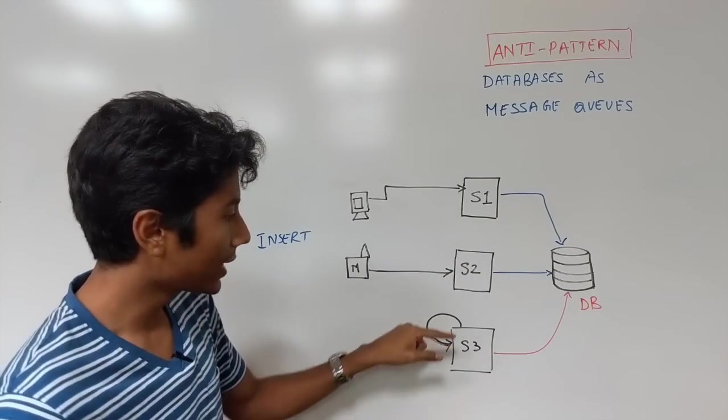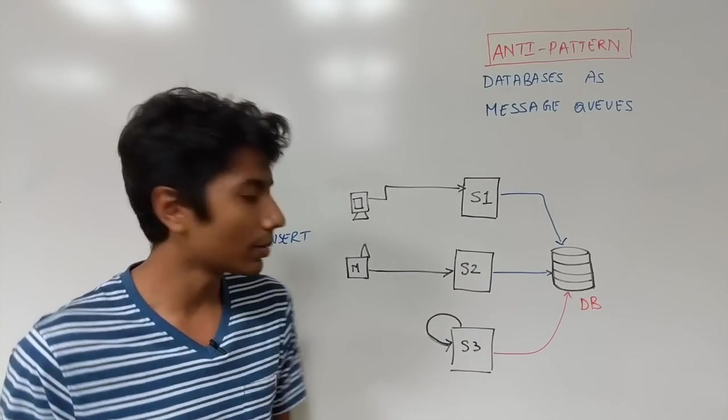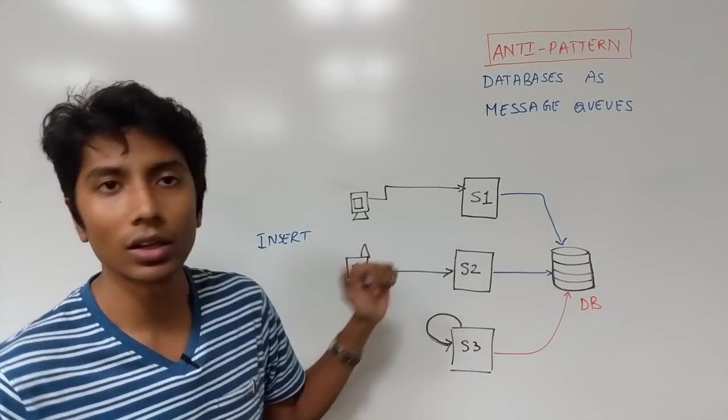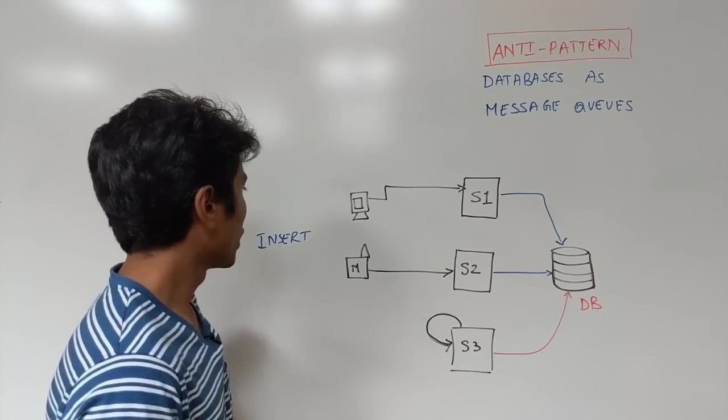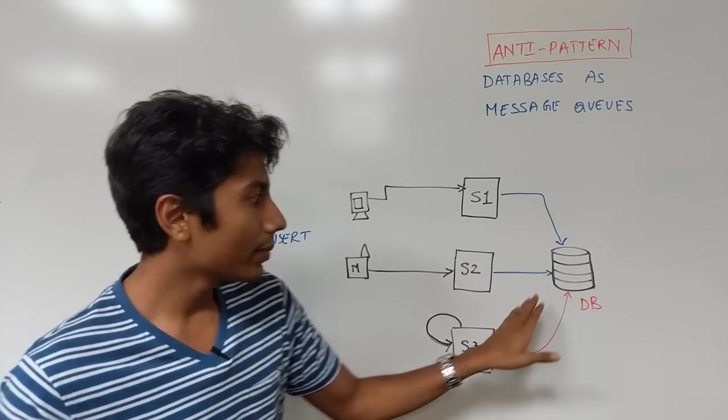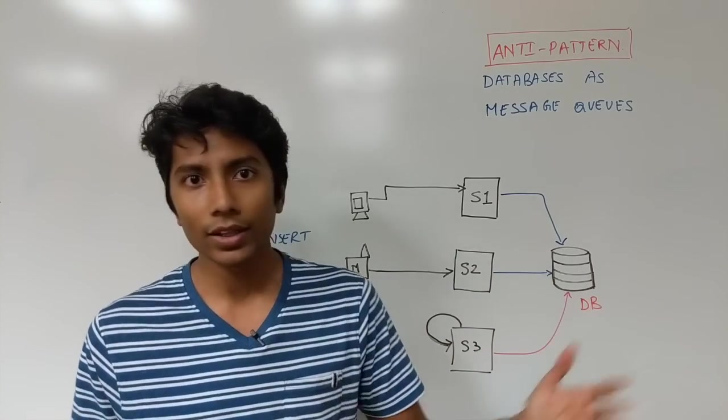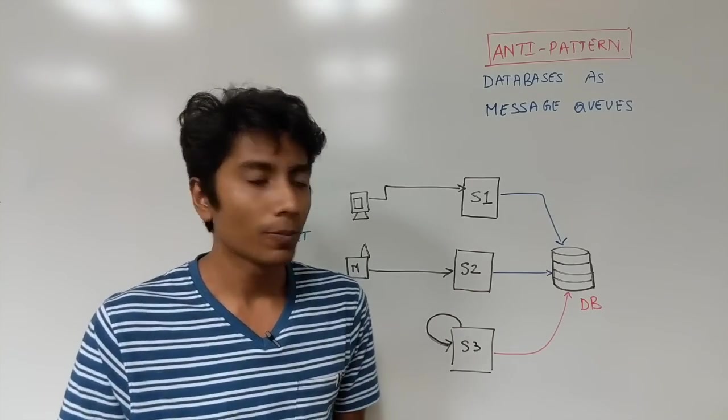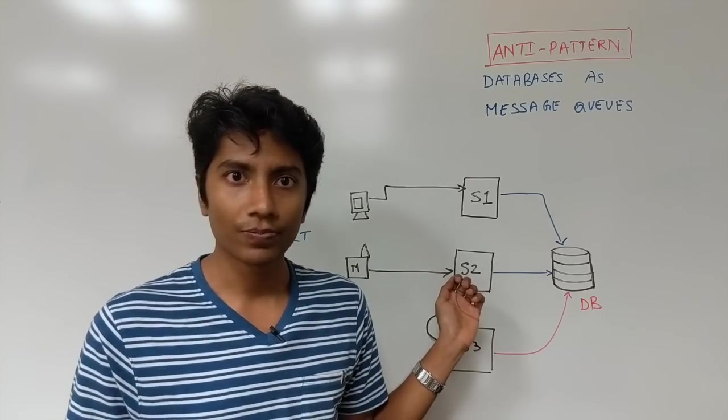So in our case, S3 has a cron job or something, so it just entered in the database and it needs to talk to another server. So through these inserts, you are telling the database that there needs to be some communication with some other server. So how will the database actually tell it to the other server? The database cannot talk to servers. It can only receive.